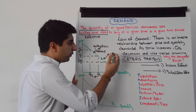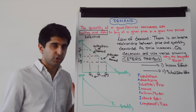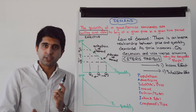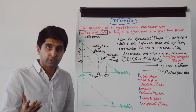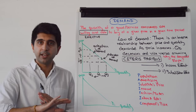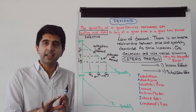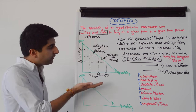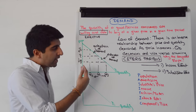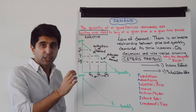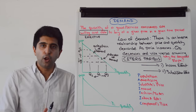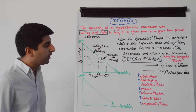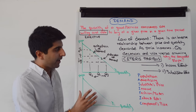Another name for that is also an expansion of demand. We move along the curve when we change price, assuming Ceteris Paribus — all other factors remain unchanged, anything else that can affect demand remains unchanged. So when prices go up or down, there is a change in quantity demanded shown by a movement along the demand curve.